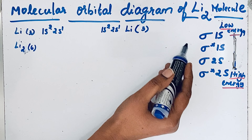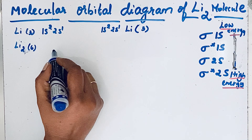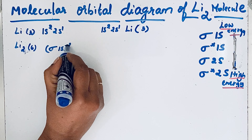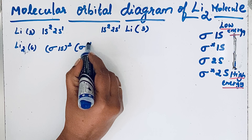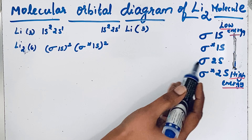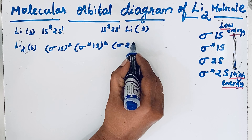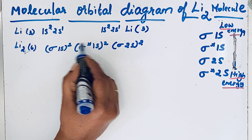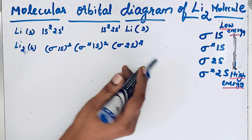We can write the molecular orbital configuration as: sigma 1s², then sigma* 1s², then sigma 2s². Counting the electrons: 2, 4, 6 — so we have 6 electrons in total.